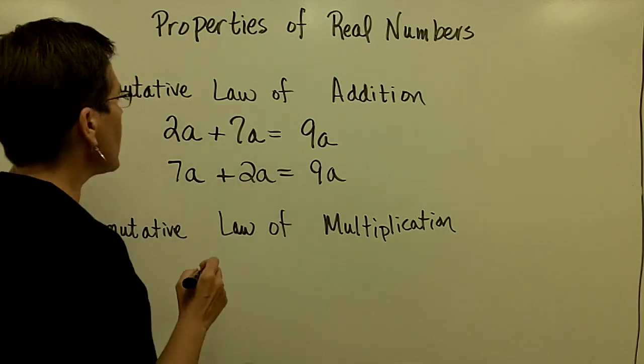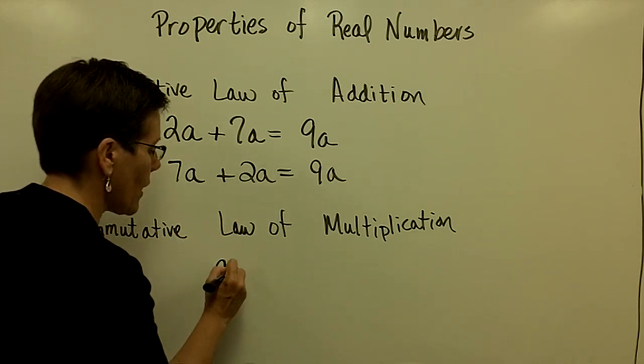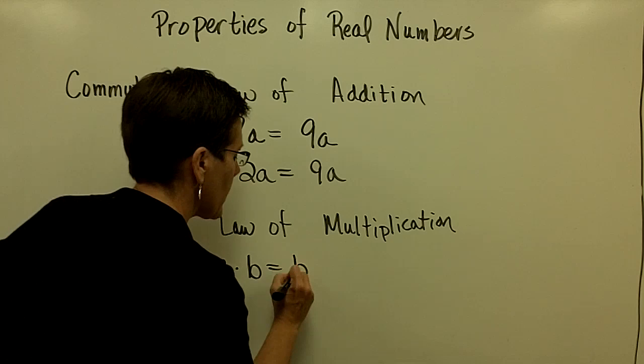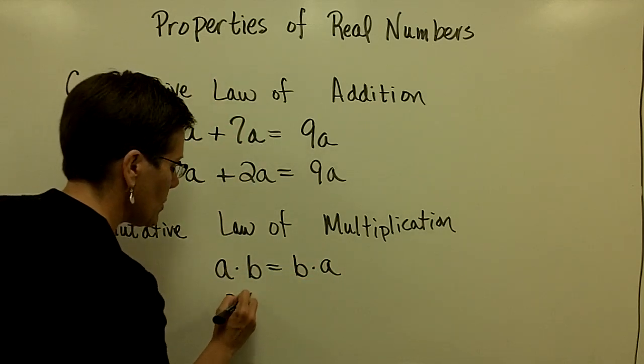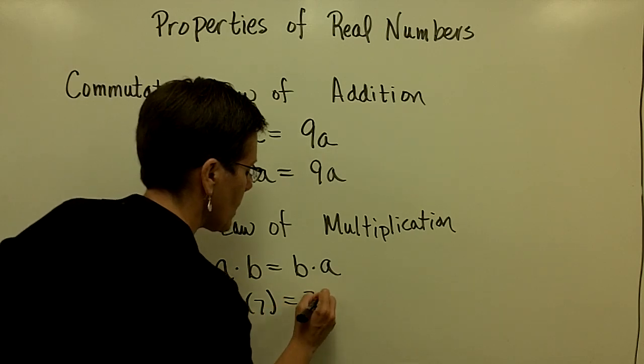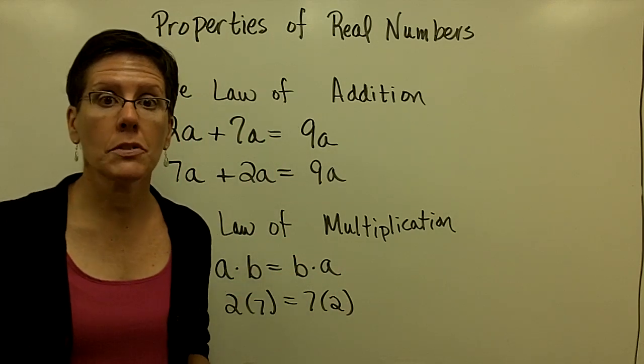The commutative law of multiplication says that I can multiply in any order. So I can take A times B or I can take B times A and I still get the same results. For example, 2 times 7 is the same thing as 7 times 2, both of those equaling 14.